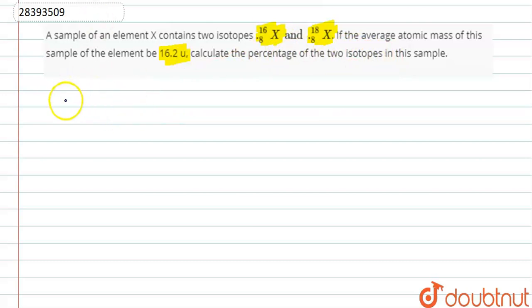So first, let's see. We'll let the percentage of 16X isotope be x%.